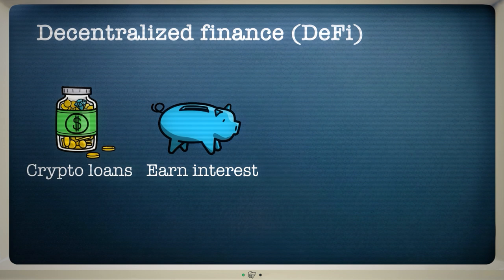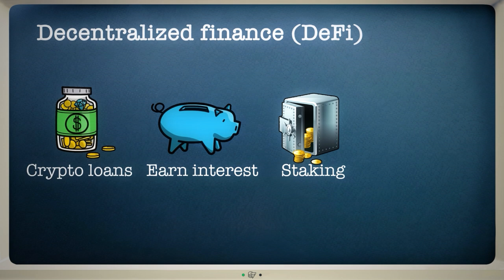A few cryptocurrencies can also be staked. This is where you lock up your coins and help keep a blockchain network secure, earning new coins as a reward. Cryptocurrencies can even be used to buy things that live on blockchains, like non-fungible tokens.